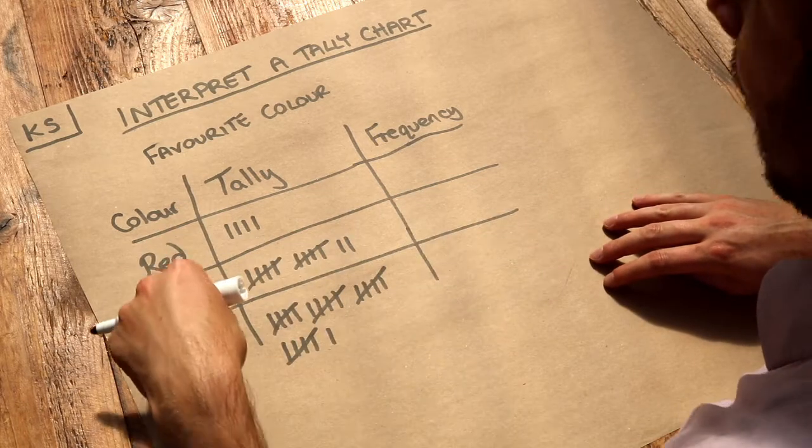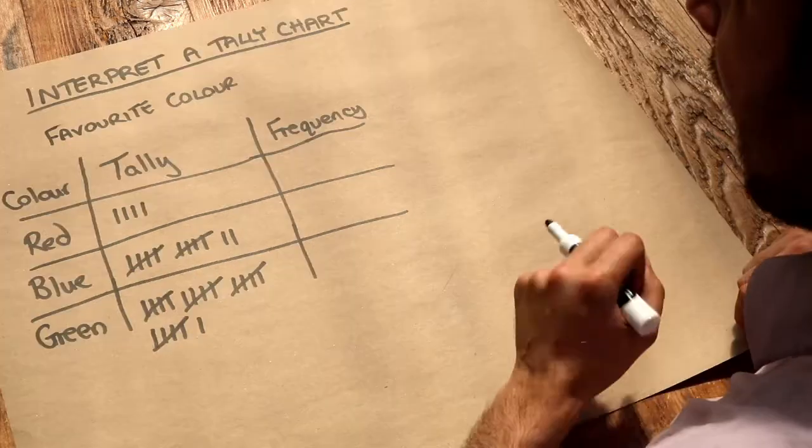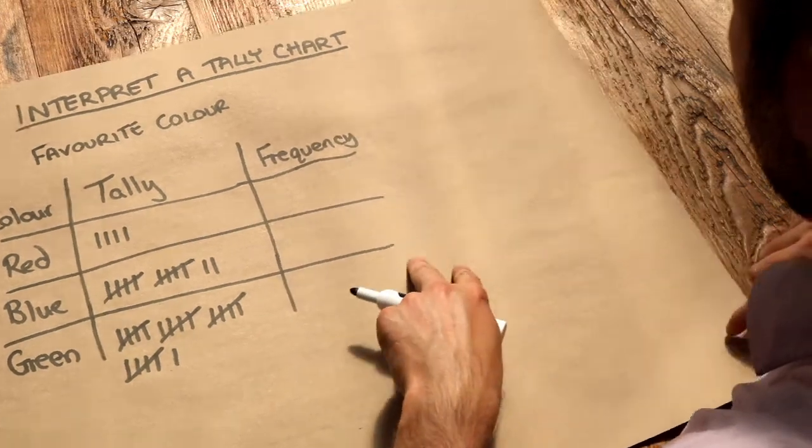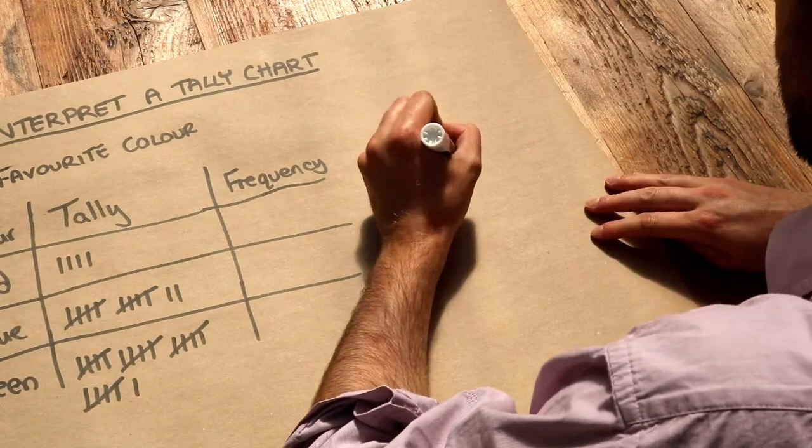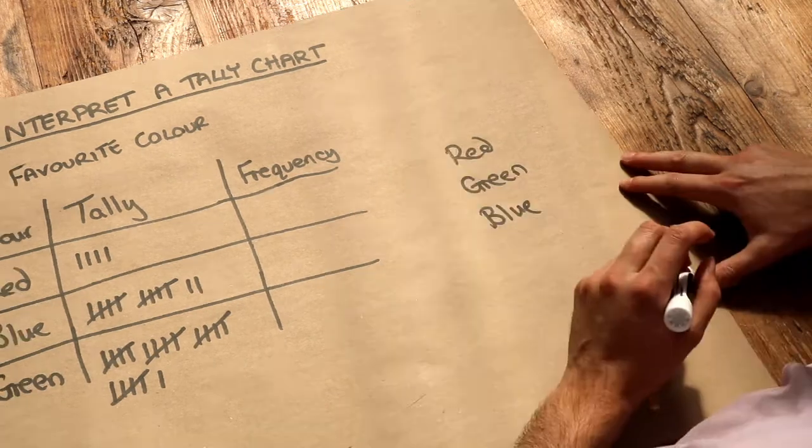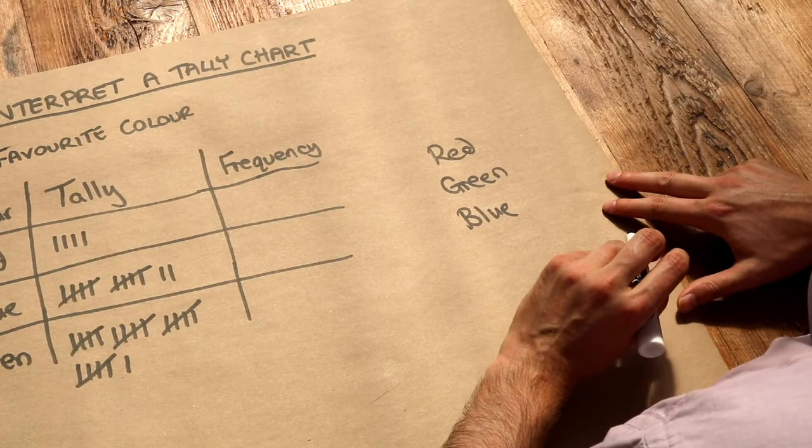the number of people who like each thing, which could be a color. We use a tally chart because we don't want to constantly change a number showing how many people like each option. For example, if